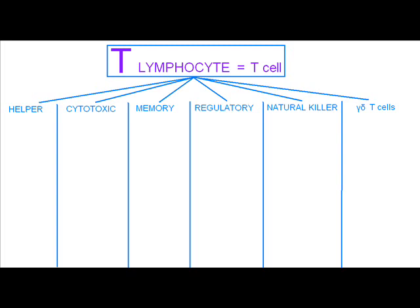T lymphocyte equals T cell. The types are: first, helper; second, cytotoxic; third, memory; fourth, regulatory; fifth, natural killer; and sixth, gamma delta T cells.